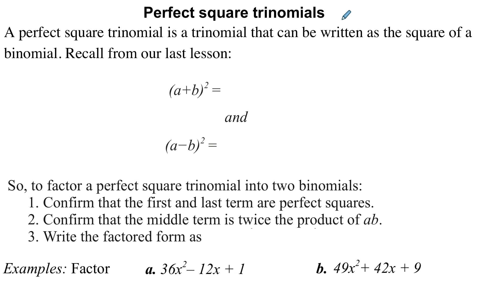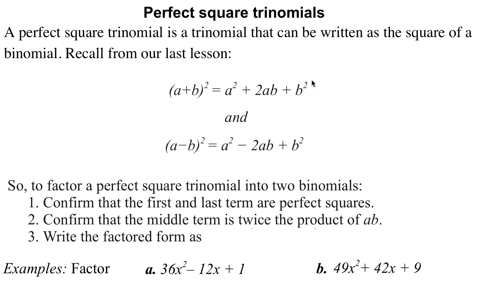Perfect square trinomials. A perfect square trinomial is one that can be written as the square of a binomial. In our last lesson, we learned how to expand (a+b)² and (a-b)² using FOIL — first, outer, inner, last. We found out that we have a formula for each of those.